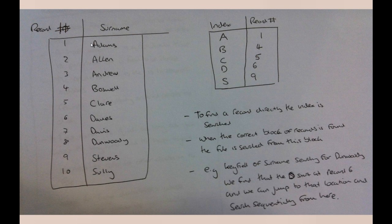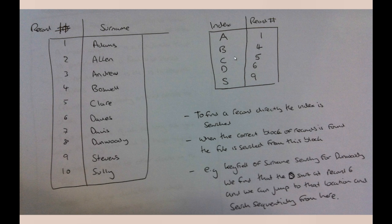To print all records, we can just go sequentially through everyone in order. For direct access — say we're looking for Dunwoody — we go through the index first, find that D starts at record number 6, and jump straight there, then sequentially search from that point. In a small example this may not seem significant, but imagine 100,000 records before D — we only searched four index points rather than 100,000 records. This allows us to jump to the correct block very quickly, greatly improving search speed.